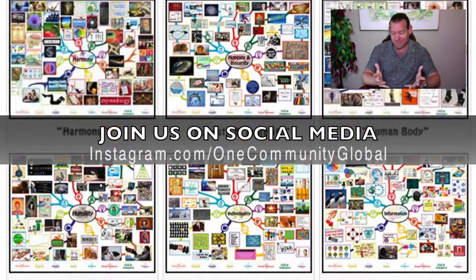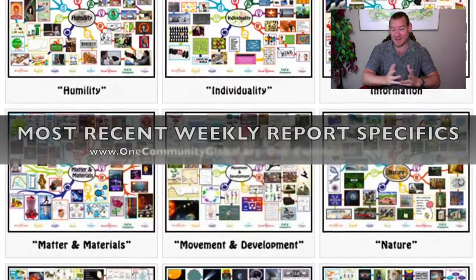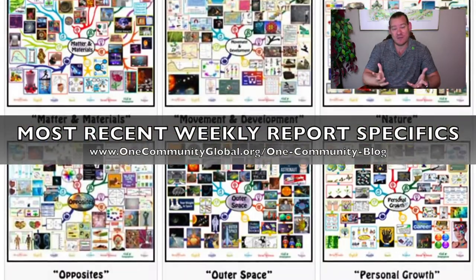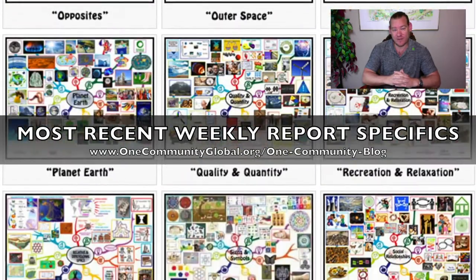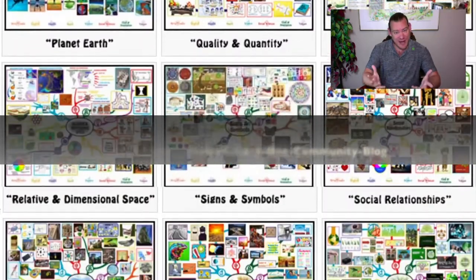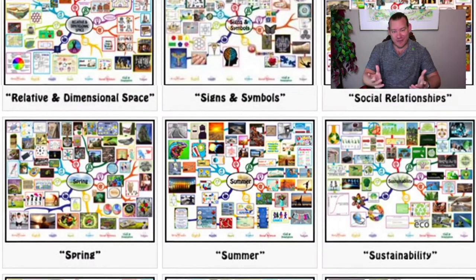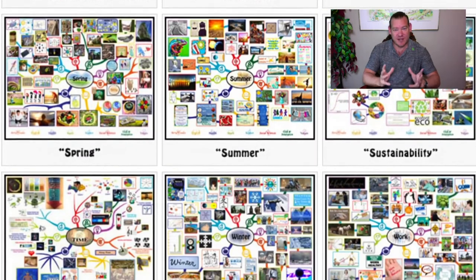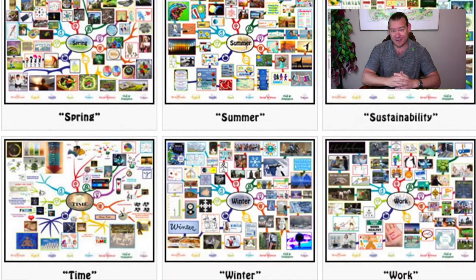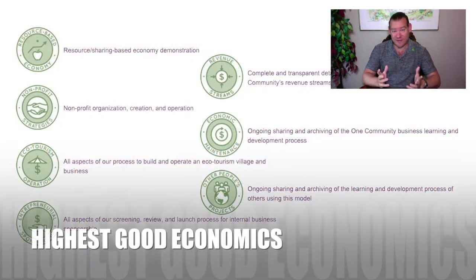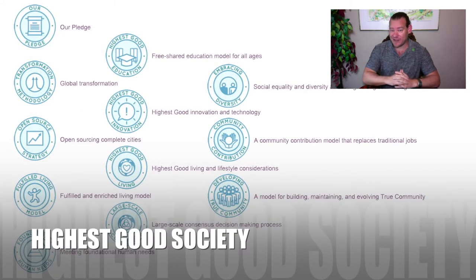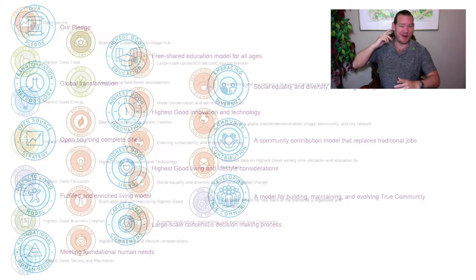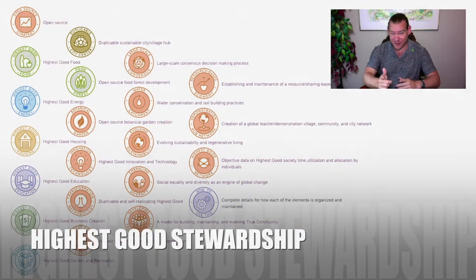That is what we are up to — an open-source sustainability model capable of changing the world positively and permanently for everybody. Stick around for a couple more minutes to see bullet points on each of the different components we're developing. Check out our written blog if you'd like to see the specifics of everything that our all-volunteer team has completed within the last week. And until next week, we will, of course, keep on keeping on. Thanks for following our progress.